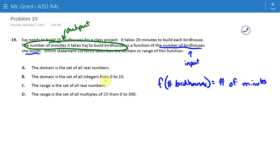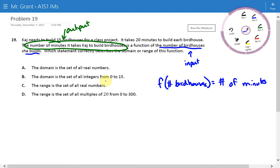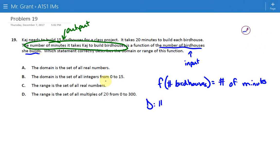Now, the question asks which statement correctly describes the domain or range of this function. Well, we should probably find the domain and range for this function. It's important to remember that the domain always describes the input of a function. So what is the input here? Well, the input is the number of birdhouses.